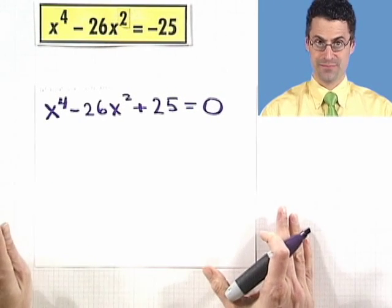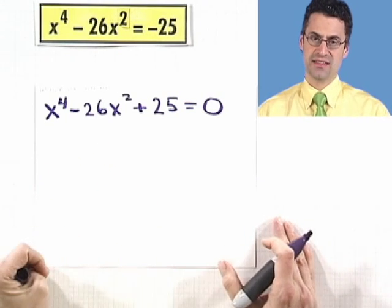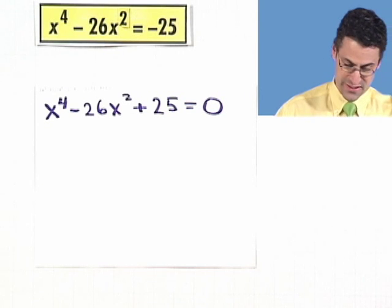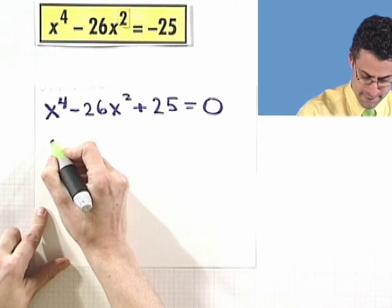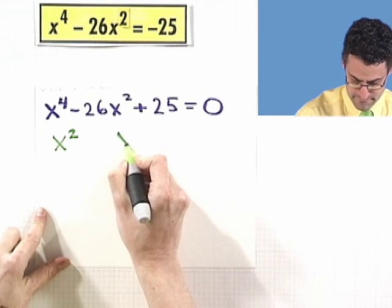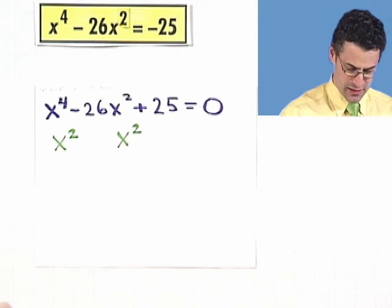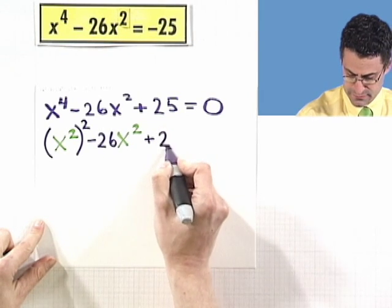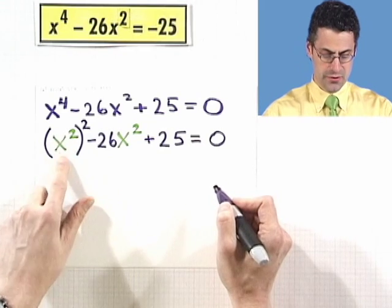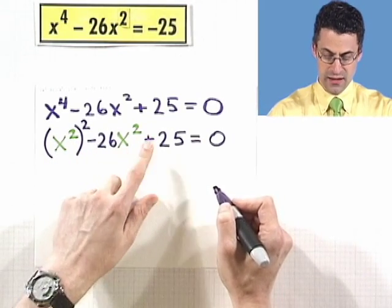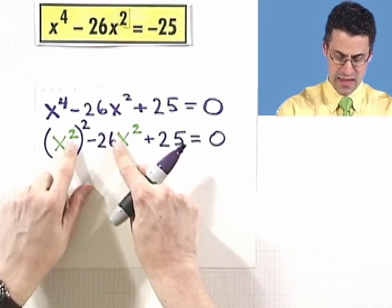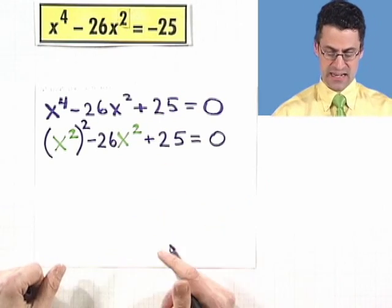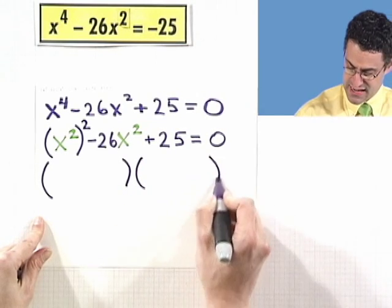Now I'm going to show you an incredible trick. I look at this and I actually see, in some crazy sense, a quadratic. This is really weird so you've got to hang with me. If I think of x squared as a single variable — call it w or z — then I have: some green thing squared minus 26 times the green thing plus 25 equals 0. It really is x squared, and I can factor this expression as a quadratic.